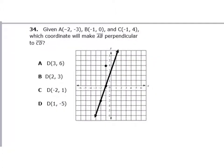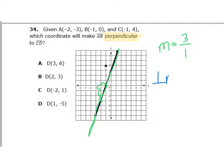Number 34: given points A, B, and C, which coordinate makes AB perpendicular to CD? Point A is at (negative 2, negative 3) and B is at (negative 1, 0). For a perpendicular line, the slope must be an opposite reciprocal. The slope of the green line has rise 3 and run 1. So for the perpendicular slope, change the sign and flip: instead of positive 3 over 1, it becomes negative 1 over 3.